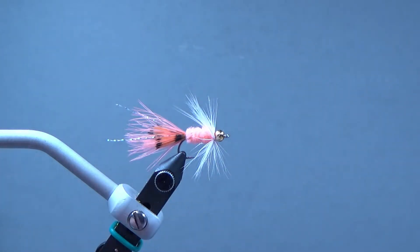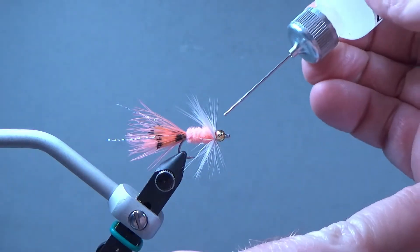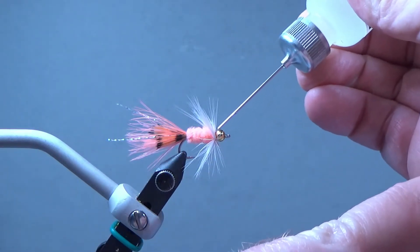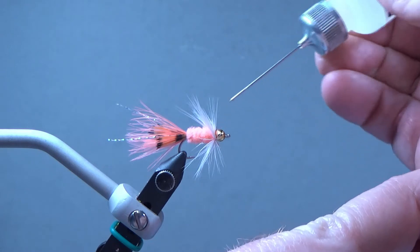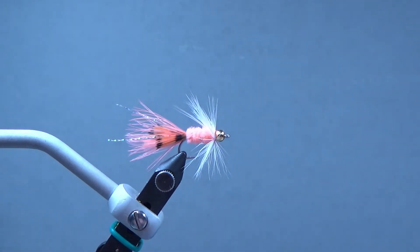And we'll take a head cement and we'll put just a drop down here behind the eye or behind the bead. That'll soak into those threads and hold it.